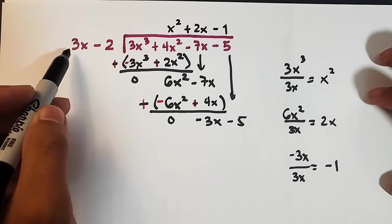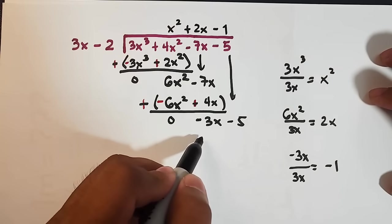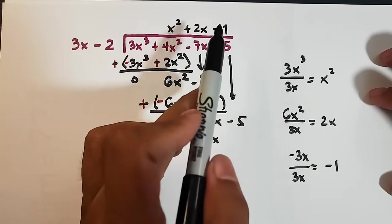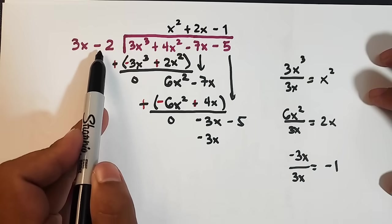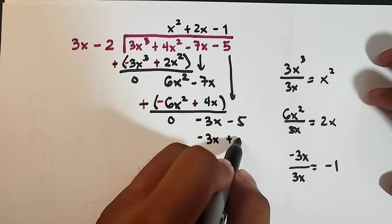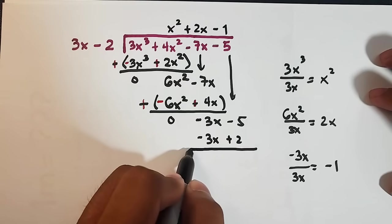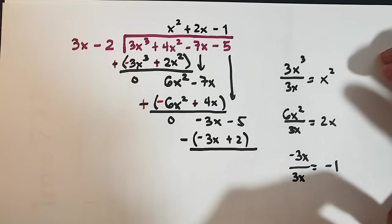So what will happen is this. We multiply. Negative 1 times 3x. That is negative 3x. Negative 1 times negative 2. That is positive 2. Subtract again. Enclose by parentheses. Remember. We change the operation.